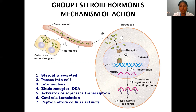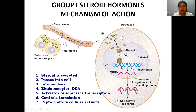Here is a diagram explaining Group 1 steroid hormone mechanism of action. Steroid hormones are secreted by endocrine gland cells into the bloodstream and reach the target cell. Since they are lipophilic, they traverse the cell membrane by passive diffusion and enter the nucleus, where they bind to the receptor forming a hormone-receptor complex. This complex binds to the specific DNA sequence called the hormone response element.